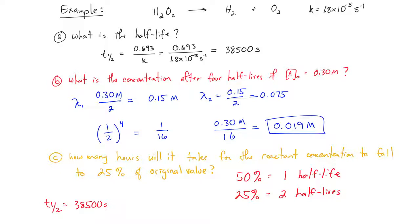We're going to take the 38,500 seconds from part A, multiply that times 2. That's 77,000 seconds. We're going to convert that to hours by using the conversion factor 1 hour equals 3600 seconds. So we're going to divide that by 3600, and that's going to be 21.4 hours.